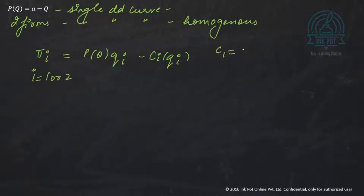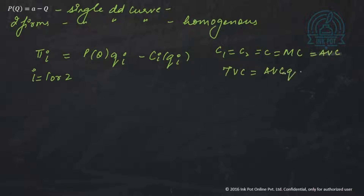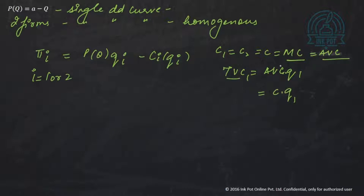Let's assume C1 equals C2 equals C, which is actually equal to MC. Since C is constant, this is also equal to AVC. So my total variable cost is AVC times Q, which for firm 1 is C times Q1. Note that we're multiplying AVC by Q1; if we wanted to go from MC to total variable cost, we'd integrate, not multiply. Let's also assume there is no fixed cost, so total cost is simply the total variable cost of firm 1.